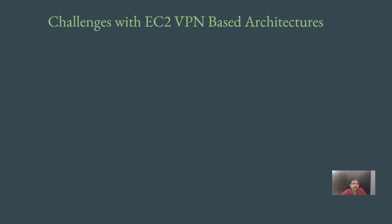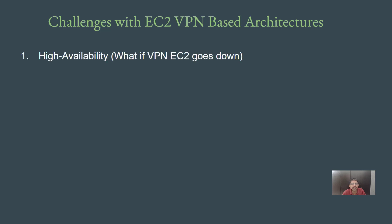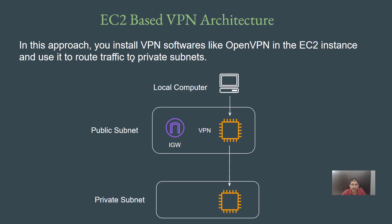When we discuss the EC2-based VPN solution, there are certain challenges it comes with. One primary challenge is related to high availability. For example, if you look at this architecture, there is only one EC2 instance where the VPN is installed. If this EC2 instance goes down for any reason, the entire VPN of your organization will go down and no one will be able to access the internal servers, which is quite a big issue in production.